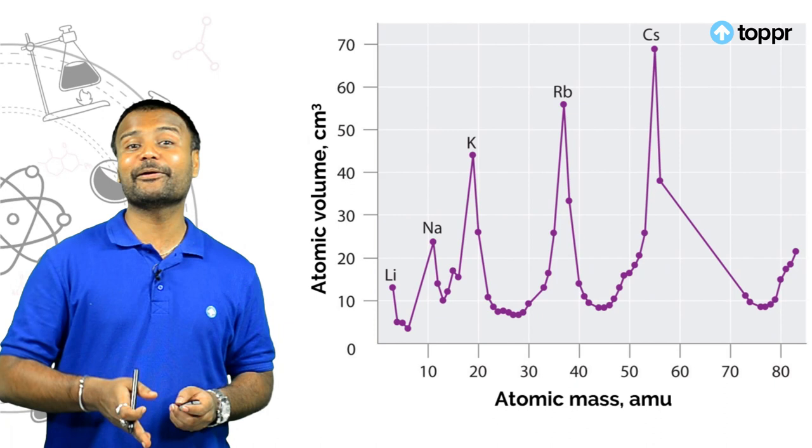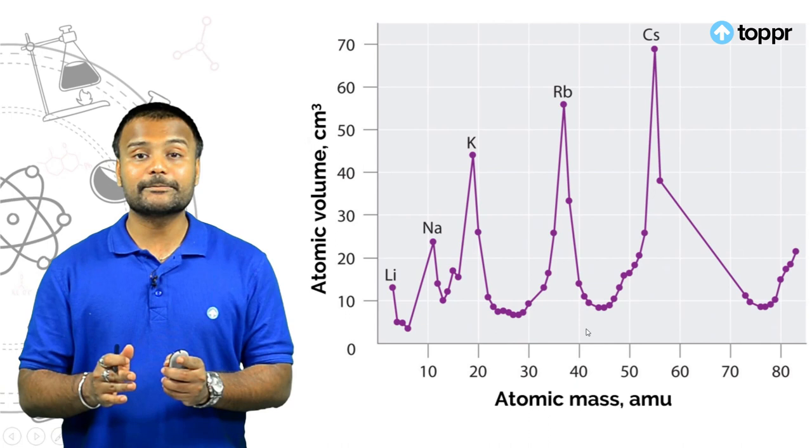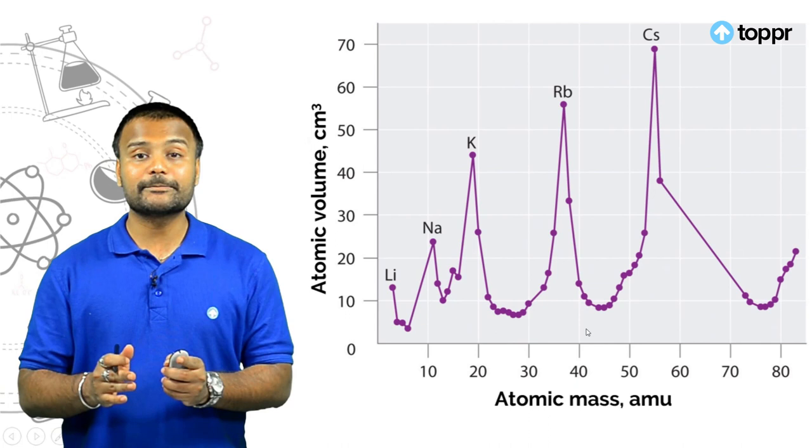Lother-Meyer plotted a graph with atomic masses on the x-axis and atomic volume on the y-axis. The curve consists of sharp peaks and broad minimas. He explained that elements with similar properties occupy similar positions on this curve.